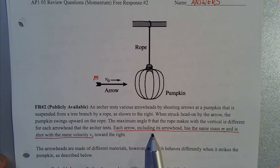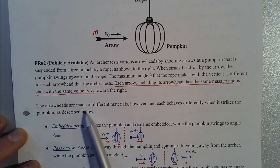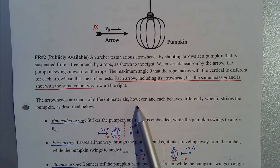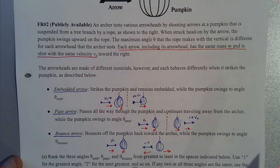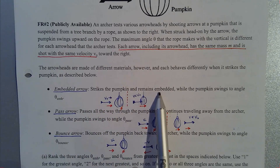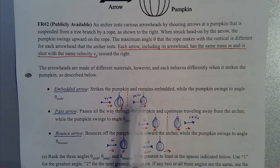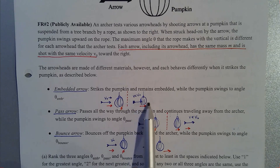Each arrow, including its arrowhead, has the same mass m and is shot with the same velocity v-sub-zero towards the right. The arrowheads are made of different materials and each behaves differently when it strikes the pumpkin. The first scenario is the embedded arrow — it strikes the pumpkin and remains embedded while the pumpkin swings to an angle theta-sub-embedded. So the arrow sticks to the pumpkin and both swing off to that final angle.